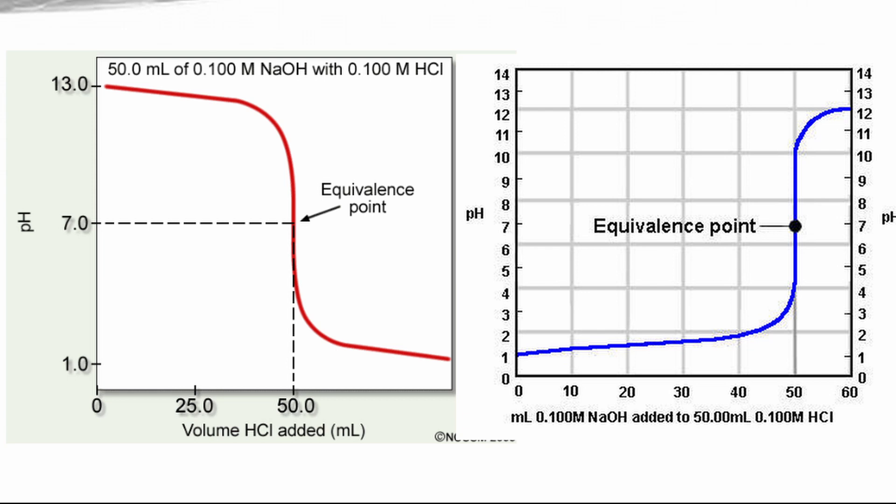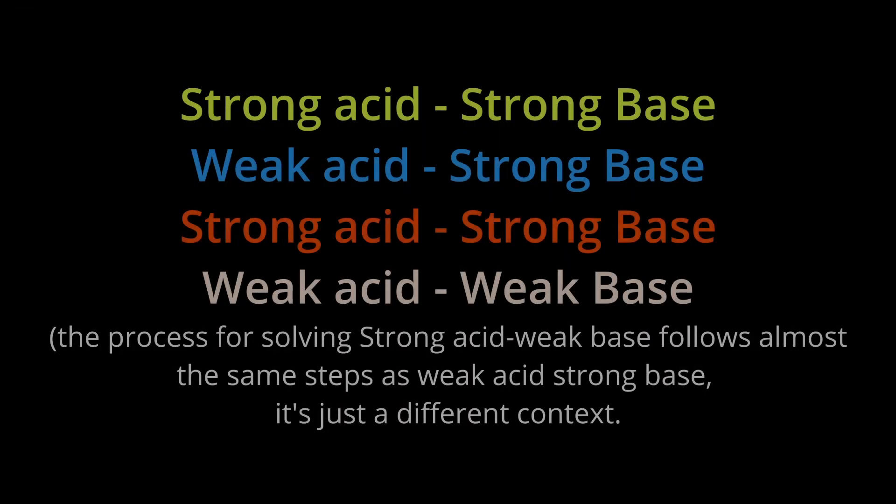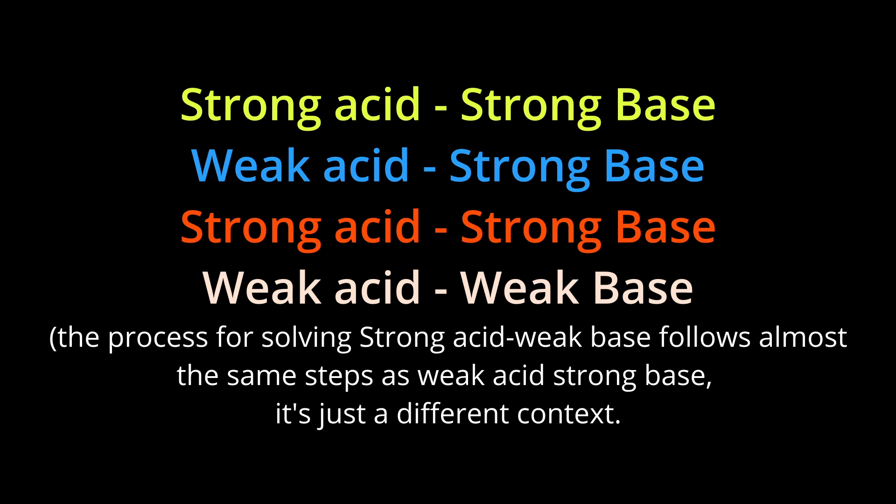Different from the endpoint, the equivalence point is the point in the titration where neutralization has actually occurred. The endpoint is just the point where a significant pH change occurs which permanently changes the indicator's color. Equivalence points can be represented in titration curves which graph pH according to the amount of titrant added to the unknown solution. There are four main titrations: strong acid strong base, which reaches an equivalence point at pH 7; strong base weak acid, which reaches an equivalence point greater than 7; strong acid weak base, which reaches an equivalence point less than 7; and weak acid weak base, which is rarely used and its equivalence point is often subject to error.